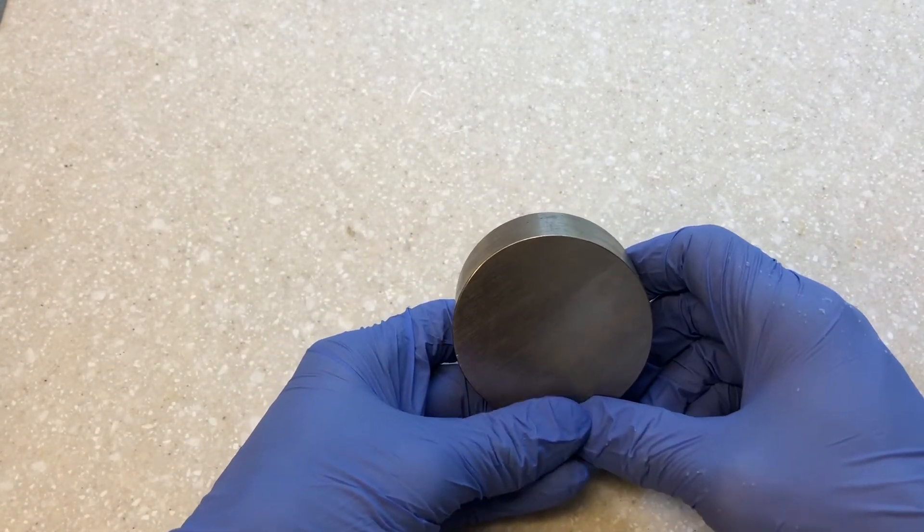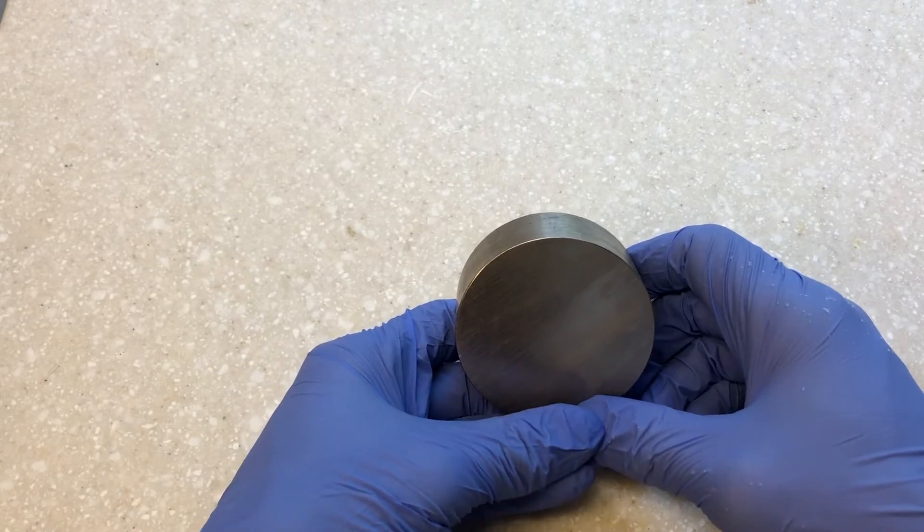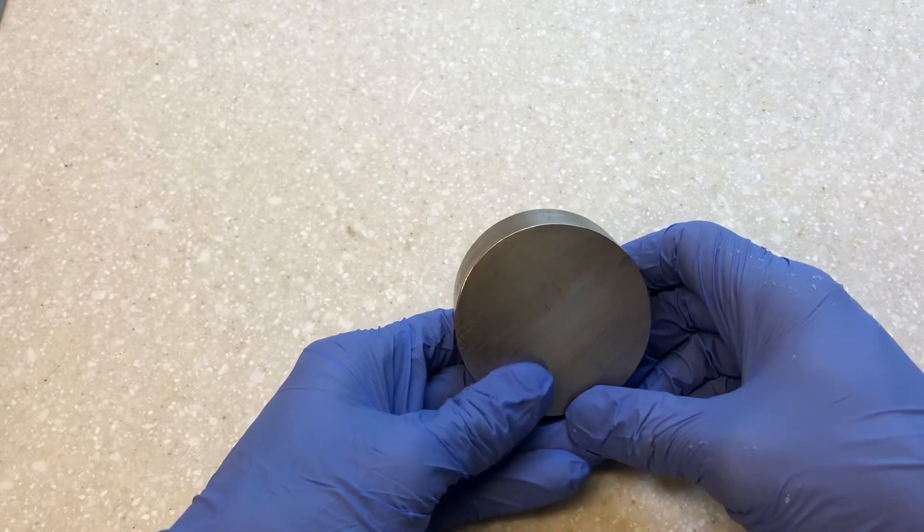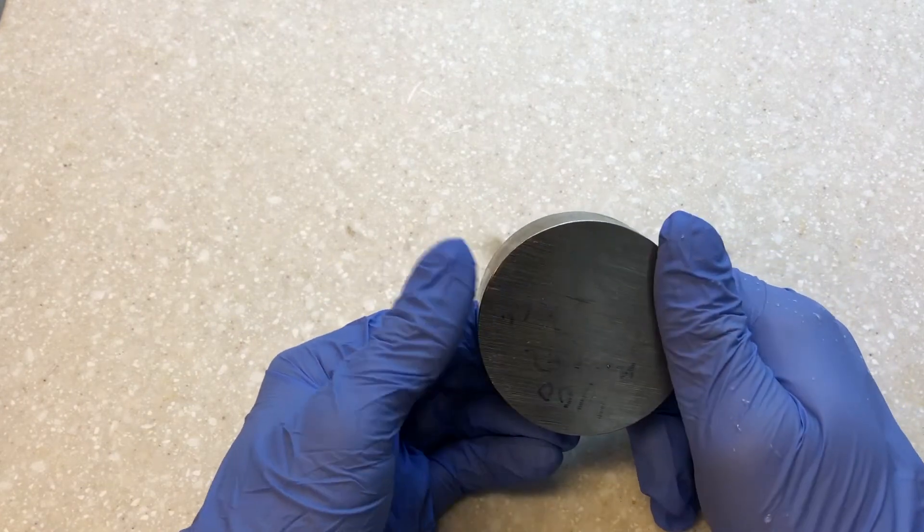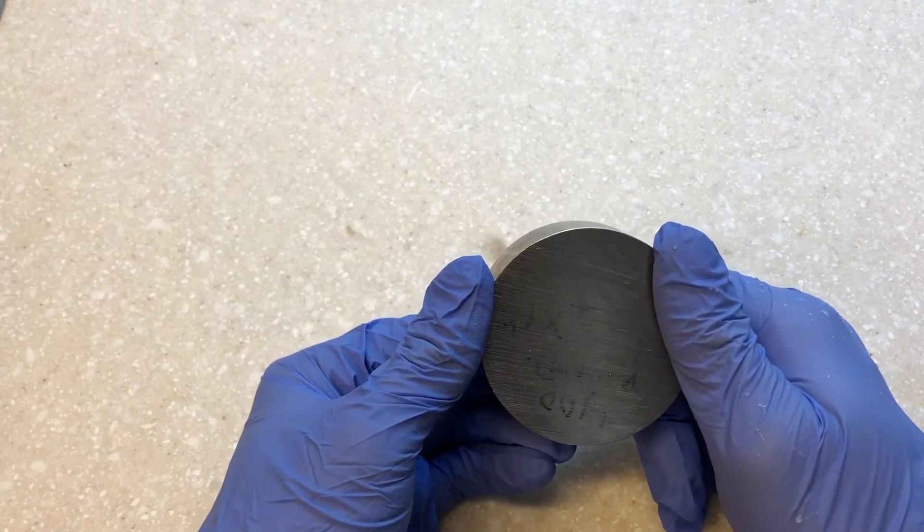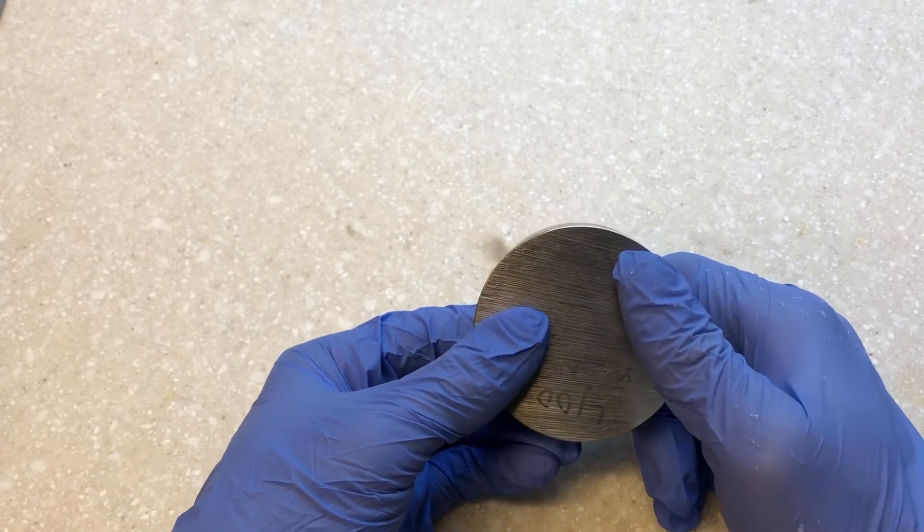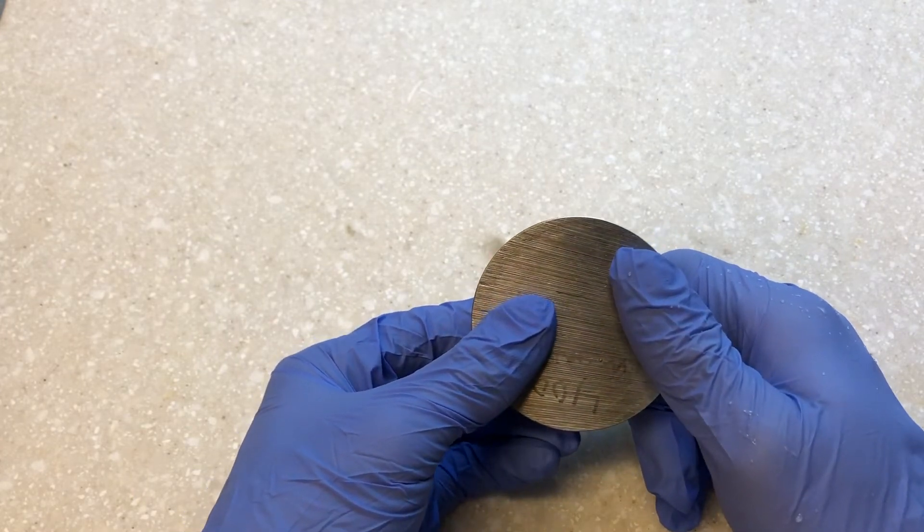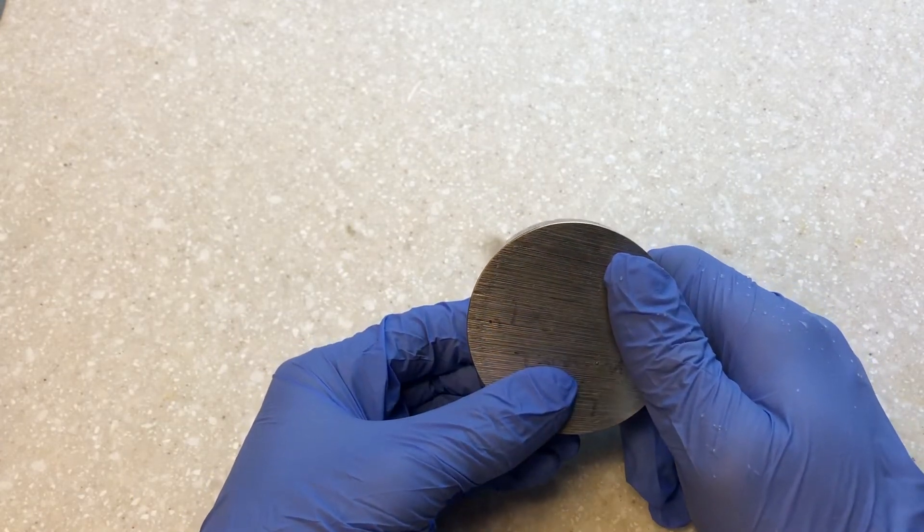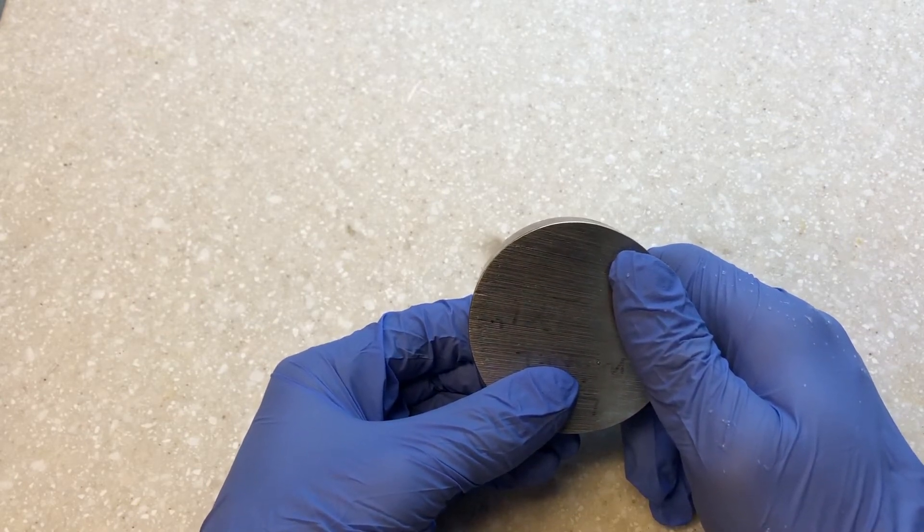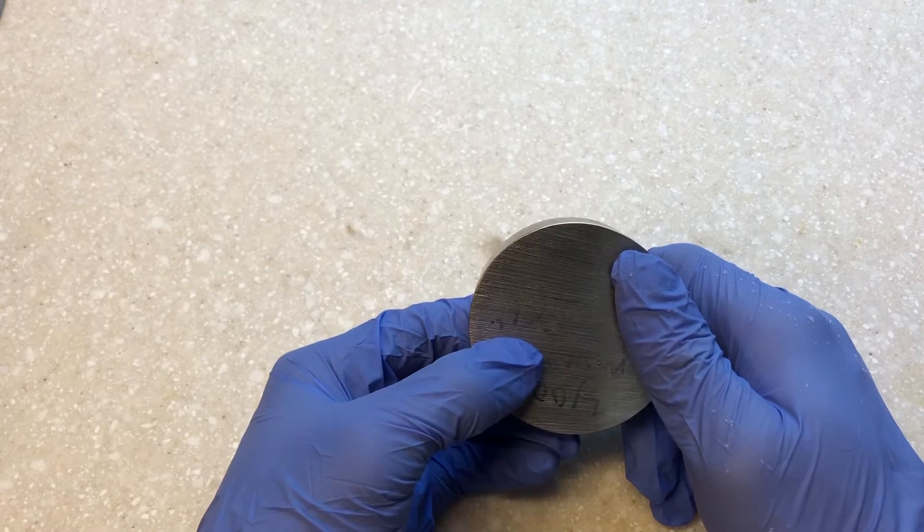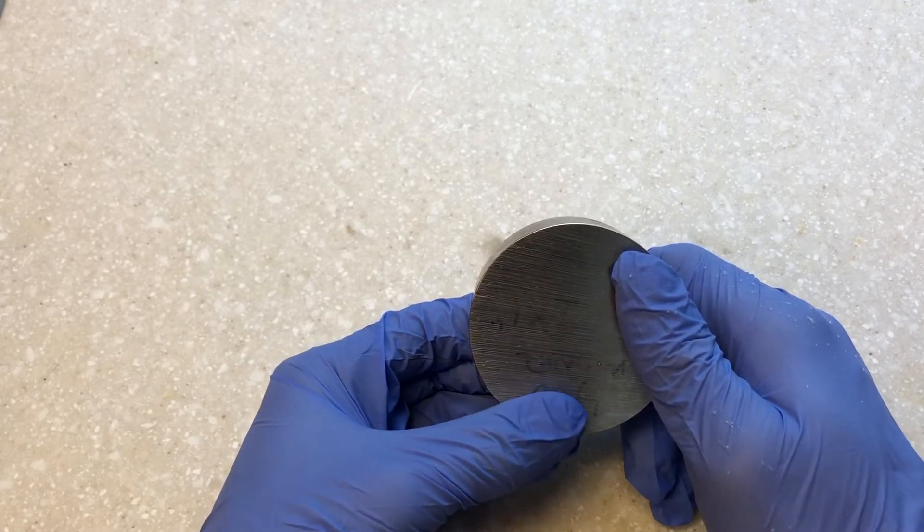Monel is a group of nickel alloys primarily composed of nickel, copper, and small amounts of iron, manganese, carbon, sulfur, and silicon. Monel has a density of 8.80 grams per cubic centimeter and a melting range of 2,070 to 2,460 degrees Fahrenheit and 1,300 to 1,350 degrees Celsius.